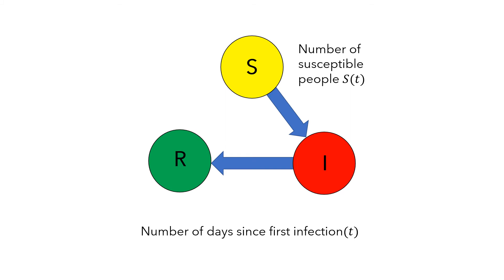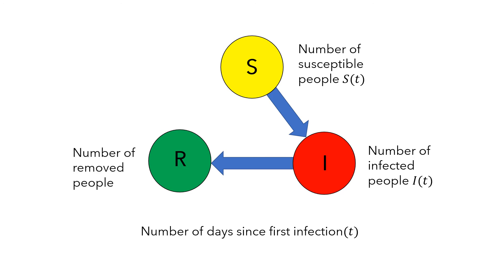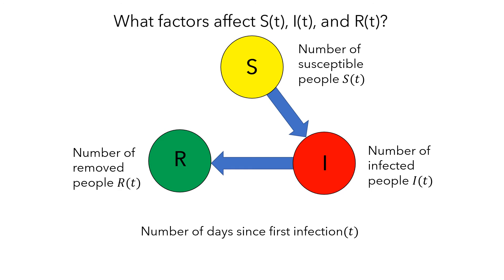I will be the number of people in the infected population. Like S, this quantity changes each day, so we write it as I(T). The fourth quantity is the number of people in the removed population, written as R(T). Next, we should think about what factors affect S, I, and R — the number of people in each group — as the number of days increases.